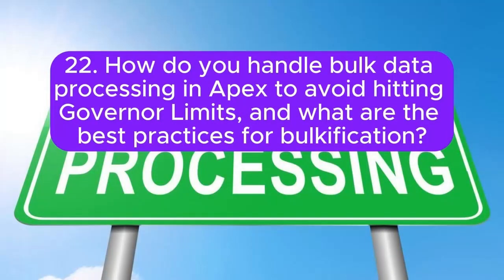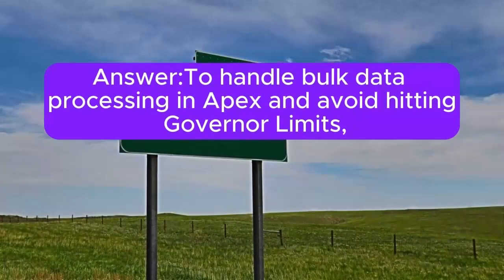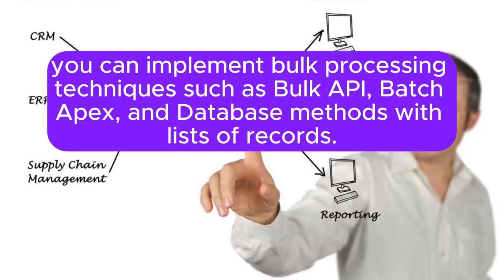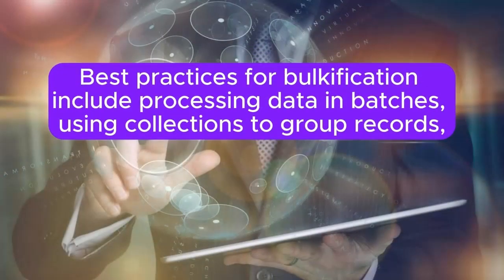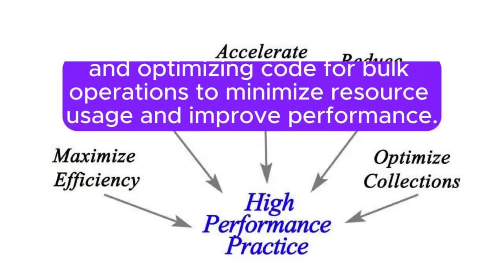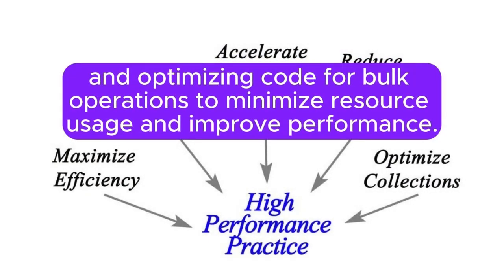Question 22: How do you handle bulk data processing in Apex to avoid hitting governor limits, and what are the best practices for bulkification? Answer: To handle bulk data processing in Apex, you can implement bulk processing techniques such as Bulk API, Batch Apex, and database methods with lists of records. Best practices for bulkification include processing data in batches, using collections to group records, and optimizing code for bulk operations to minimize resource usage and improve performance.